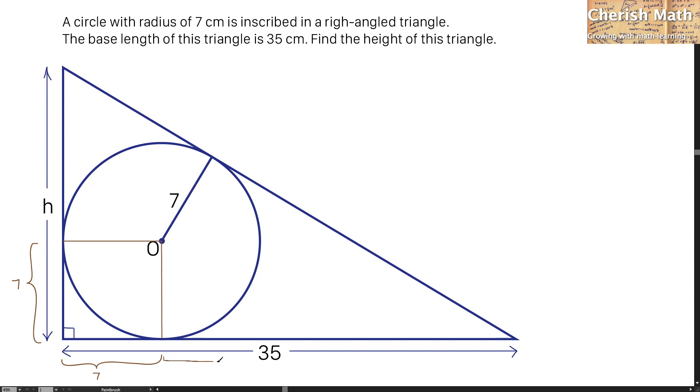Now what about here? I'm going to get 35 minus 7 equals 28 cm. Now for this part, it will be h minus 7.